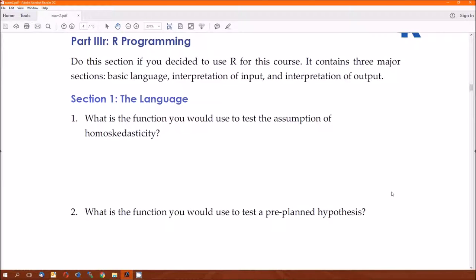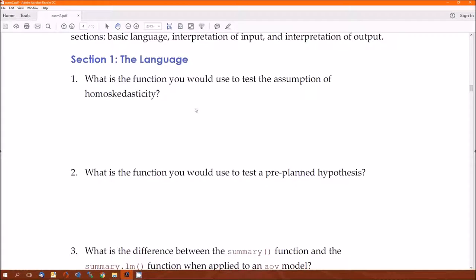Part three, the R programming, section one, the language. What function would you use to test the assumption of homoscedasticity? You could either use Fligner.test or Levine.test. Both will do it. In this class, I think I emphasize Levine.test, whereas in other classes that I've taught some of you, it would be Fligner.test. They're both tests of homoscedasticity.